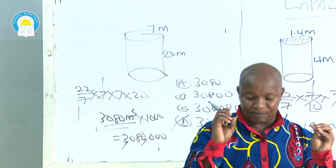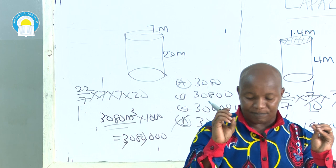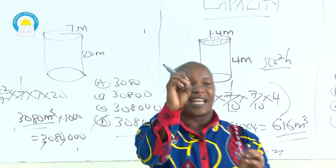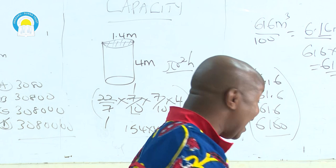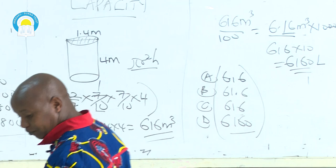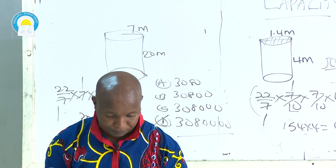In year 2015, question number 21, they already gave you the volume of a water tank as 1,084 cubic meters, then asked for the capacity in liters. You are lucky — the volume is already given. Yet many candidates during that year messed up with that question. They also said the tank is three-quarters full, and asked how many liters of water are needed to fill the container.